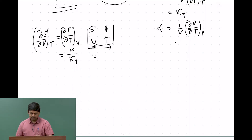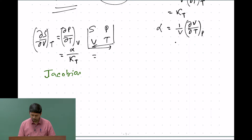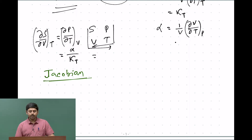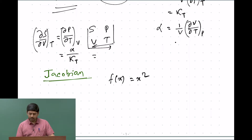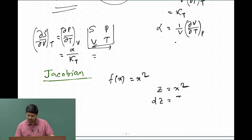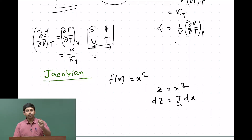First, let us understand what the Jacobian is. The Jacobian is something that changes variables from one to another. For example, if f(X) = X² and I want to convert it to a function of Z, I write Z = X². Then I can write dZ = J (Jacobian) times dX. So the Jacobian is the quantity that converts one variable to another.